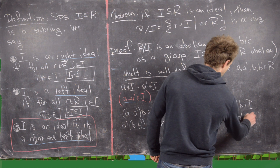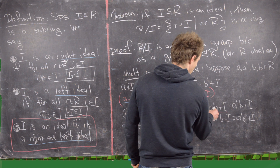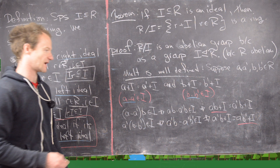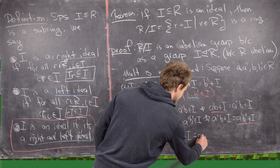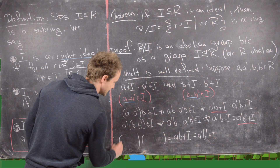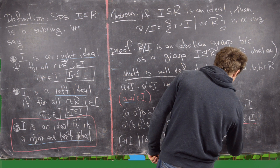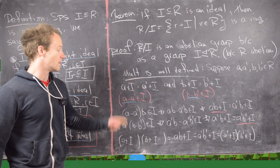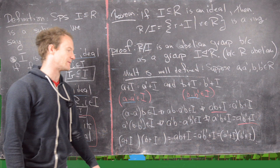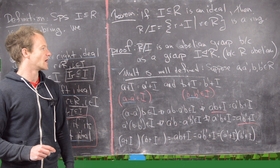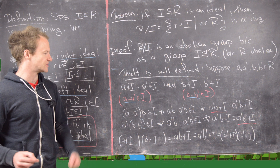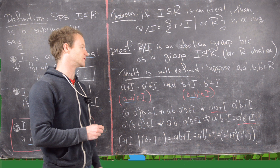Combining, we get a·b plus I equals a′·b′ plus I — that is, the coset (a+I)(b+I) equals the coset (a′+I)(b′+I). Regardless of which coset representatives you take, you get the same product, so multiplication is well-defined. The remaining steps — checking that multiplication is associative and that the distributive rules hold — follow from the fact that R itself is a ring, and those are left as an exercise. That's a good place to stop; in a future video we'll look at lots of examples of quotient rings.